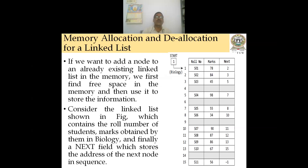If you want to add a node to an already existing linked list in memory, we first find free space in the memory and then use it to store information. Consider a linked list storing roll number, marks, and a link field. The start node stores the starting node address. For example: S01 with marks 78, S02 with 84, S03 with 45, S04 with 98, S05 with 55, and so on.